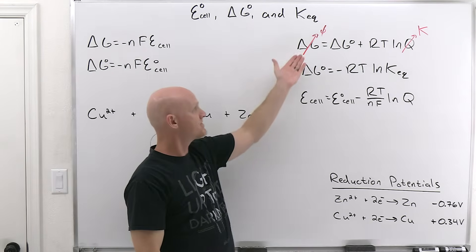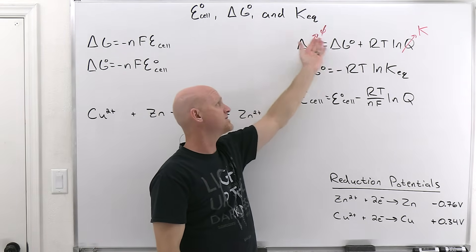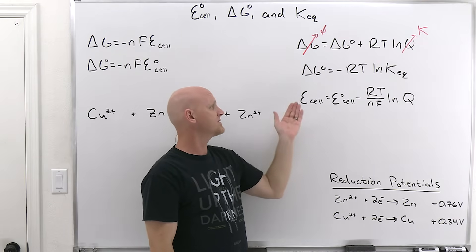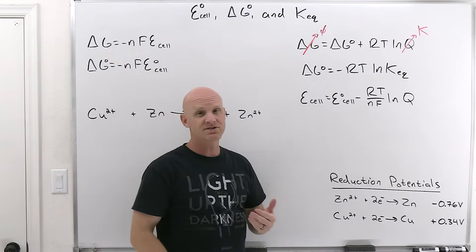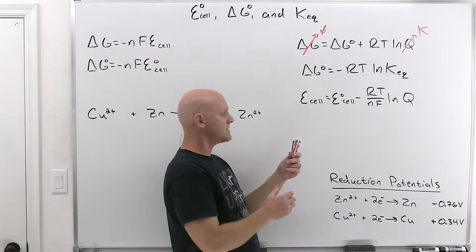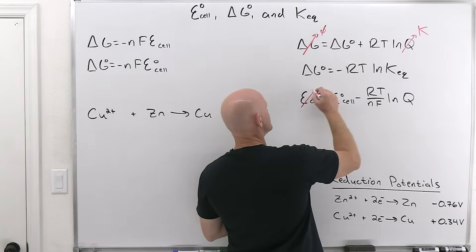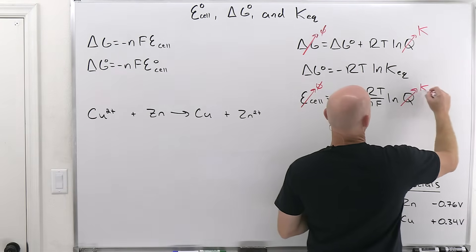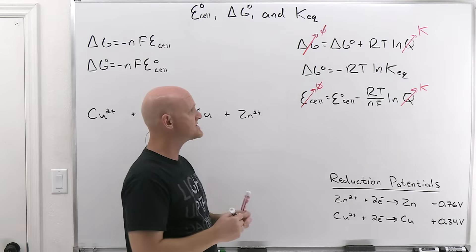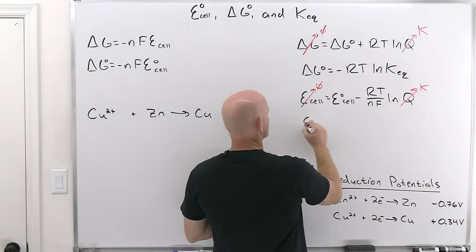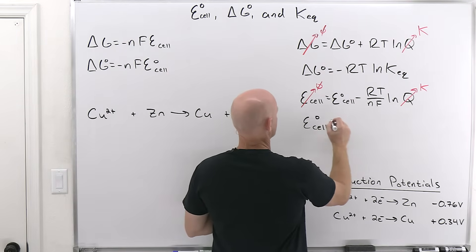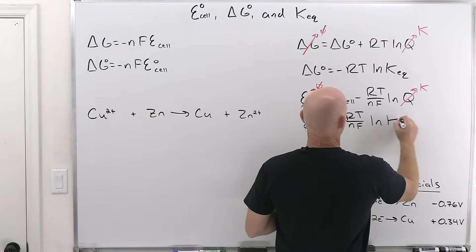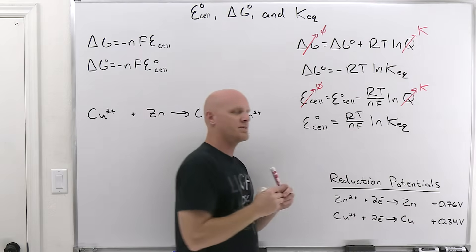In the last lesson, we saw that from that lovely relationship between the non-standard and standard values for delta G, we derived the Nernst equation relating the non-standard and standard values for the cell potential, the E cell. And in similar fashion, at equilibrium, this E cell value under non-standard conditions goes to zero, and Q equals K. And we get another relationship in very similar fashion out of this, where E cell standard equals RT over NF natural log of the equilibrium constant.